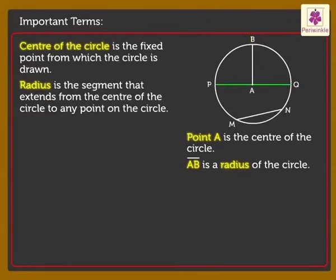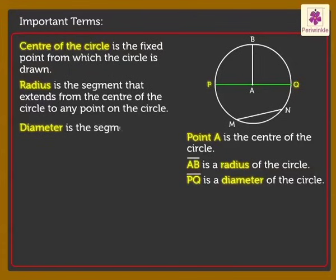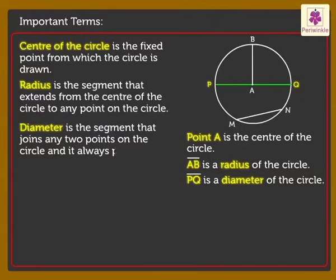Line segment PQ is a diameter of the circle. Diameter is the segment that joins any two points on the circle and it always passes through the center of the circle.